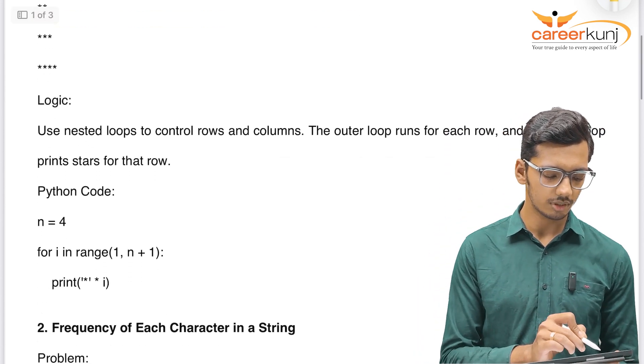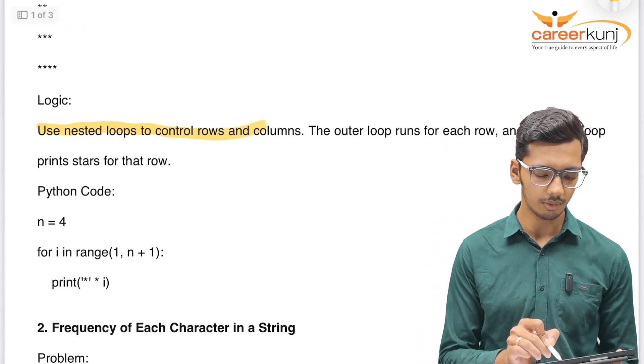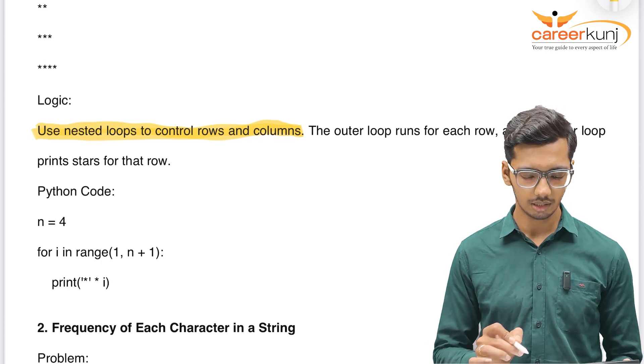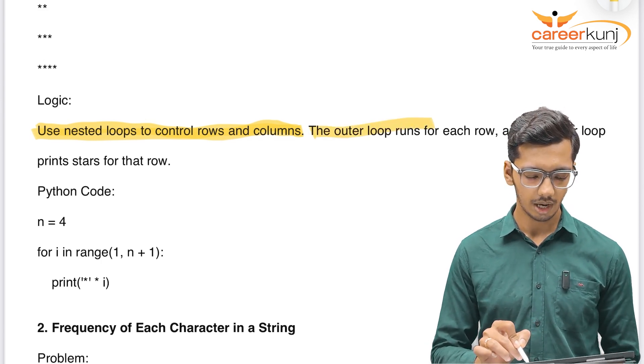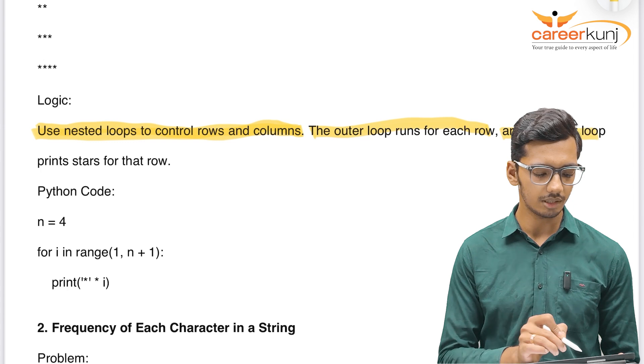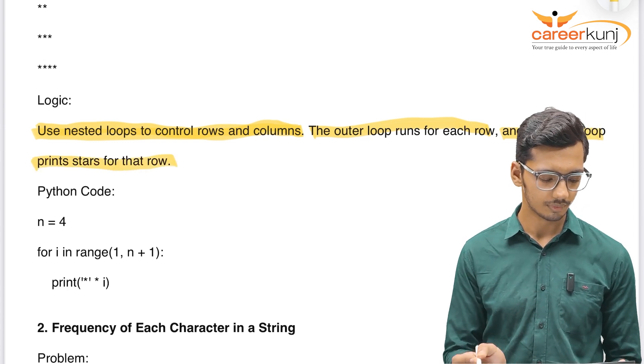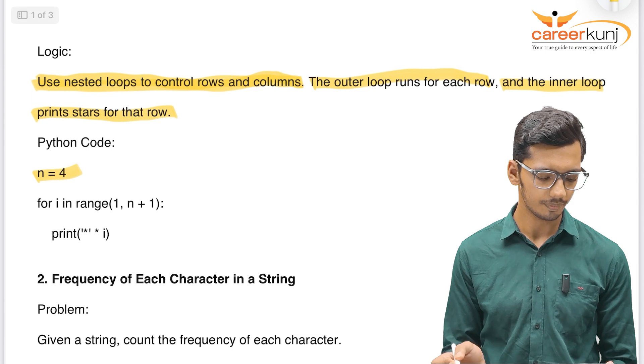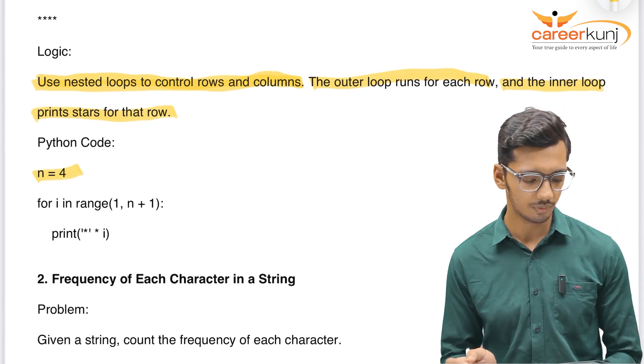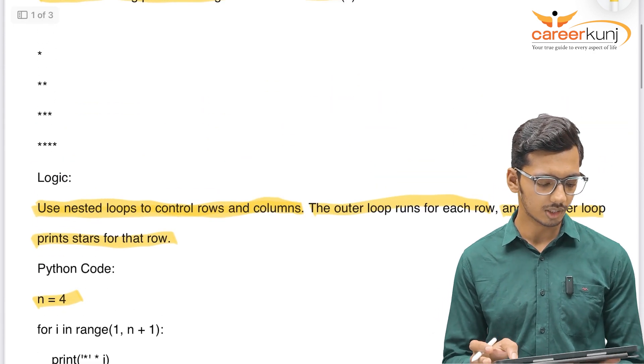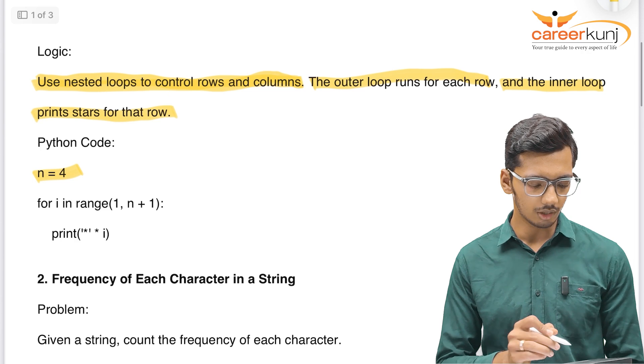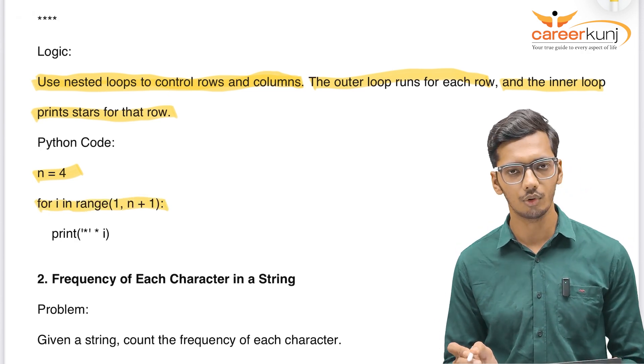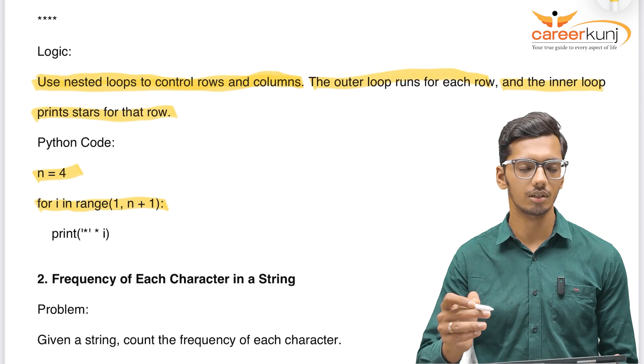The logic we can use is we will use nested loops to control the rows and columns. So we will be having two loops. There will be one outer loop which will take care of each row and the inner loop which will exactly print the pattern of stars for that row. It's just a three-line code. We will declare N as four, as we are having only four rows as well as column. The first loop that I will run, it will run in range of 1 to N plus 1.